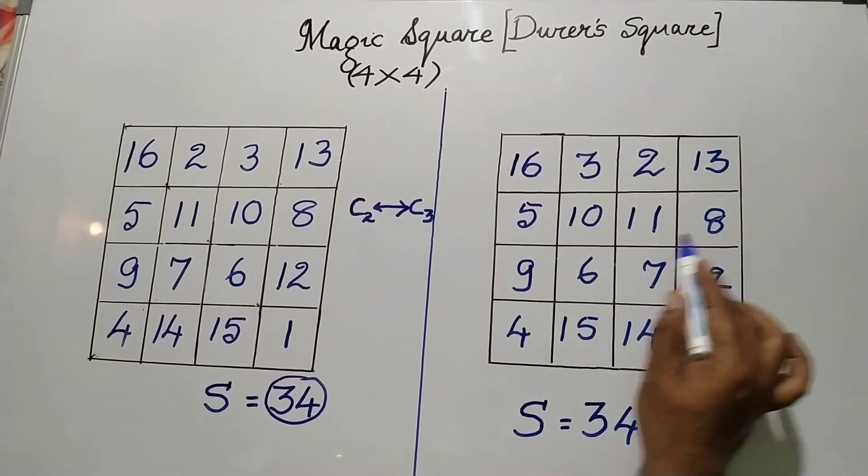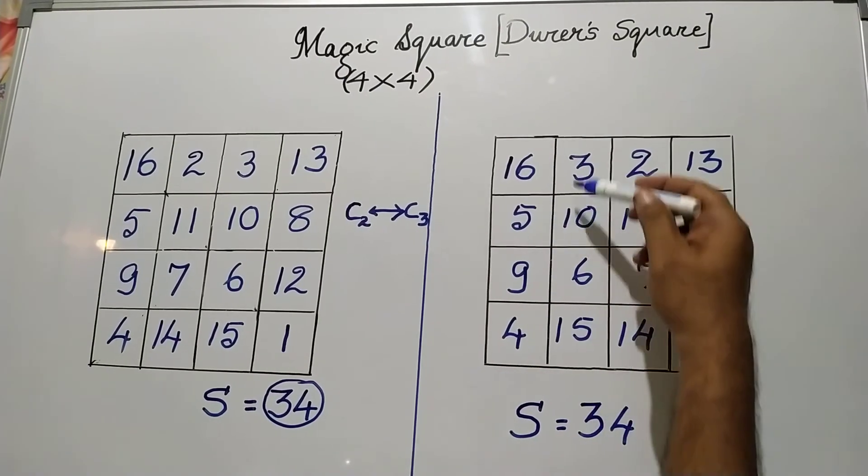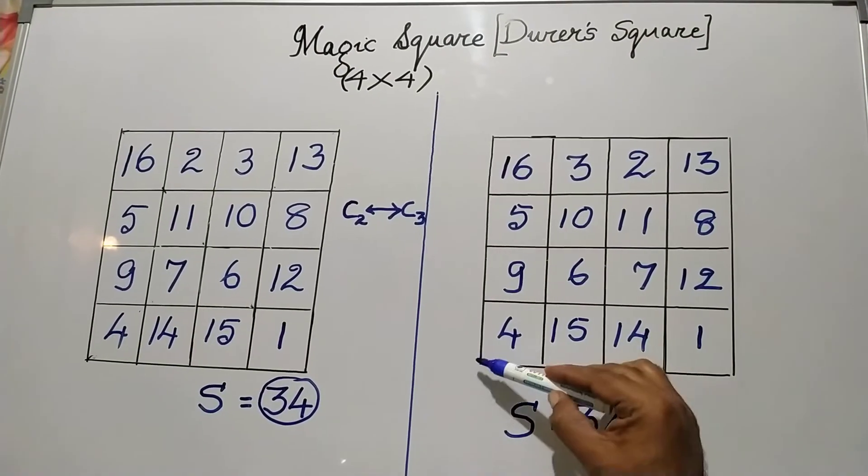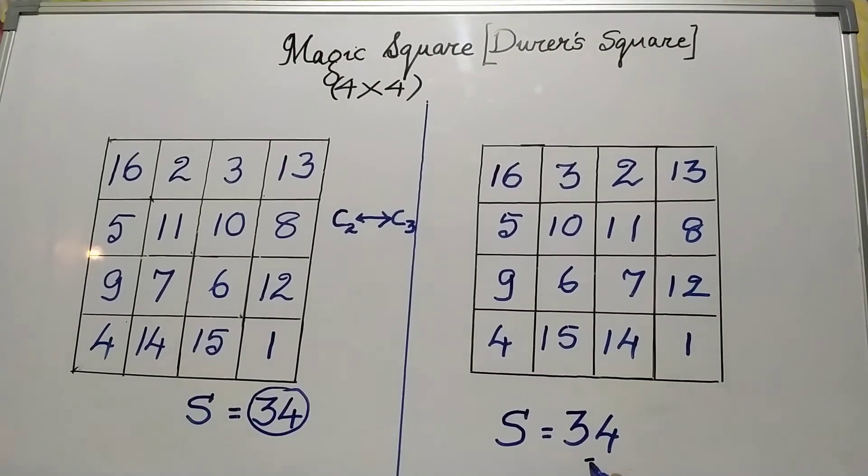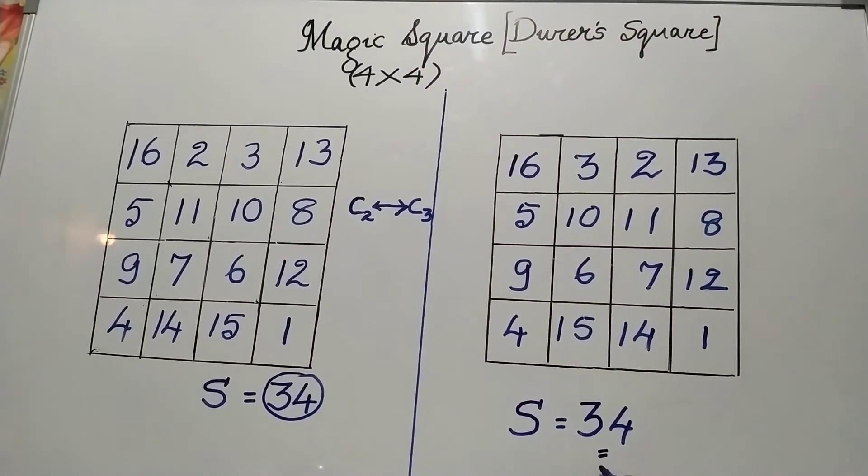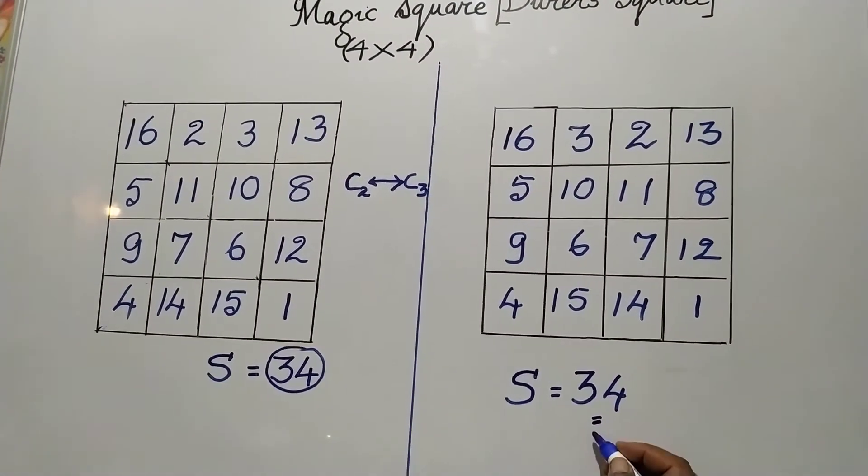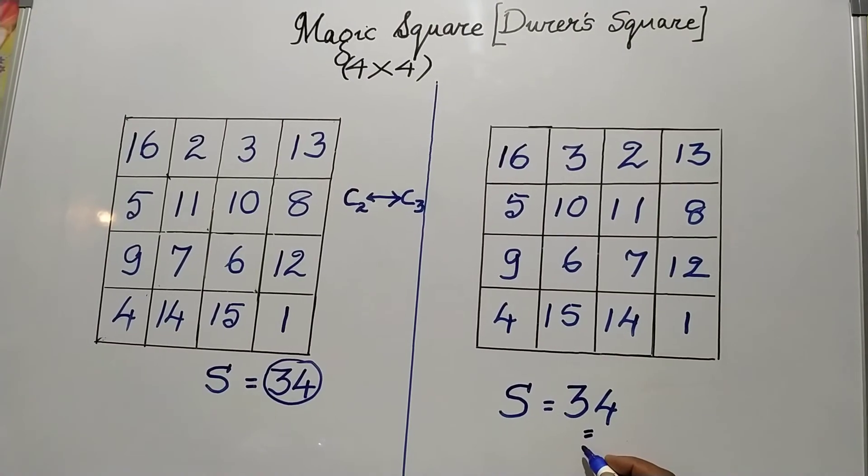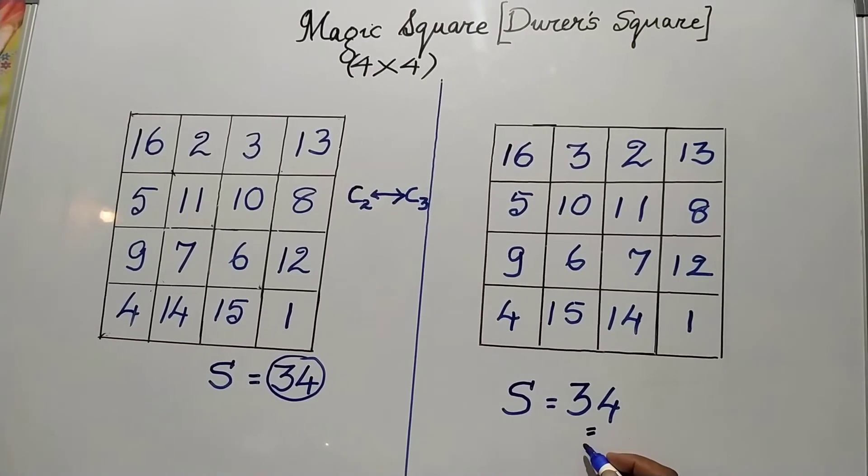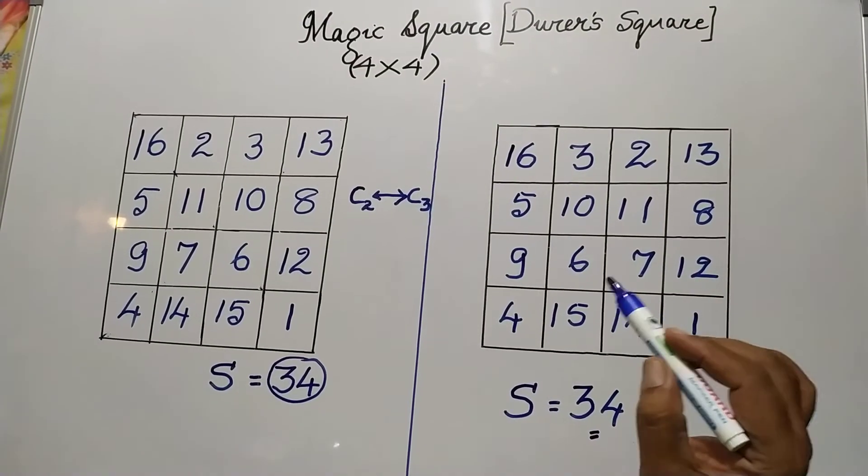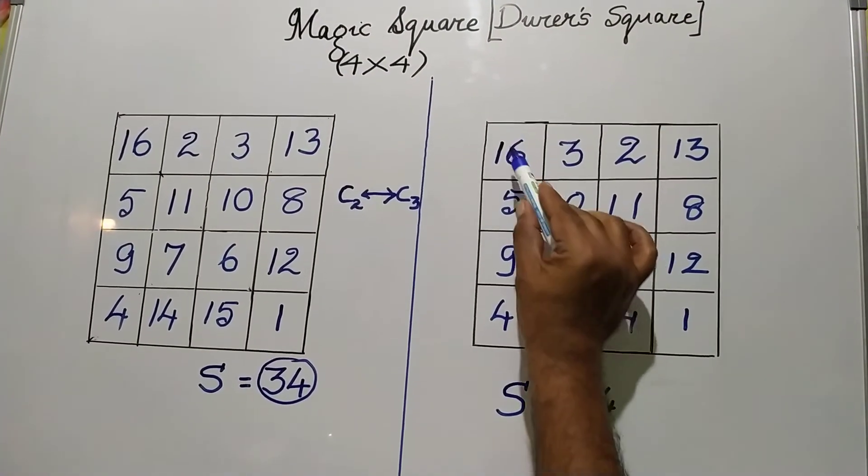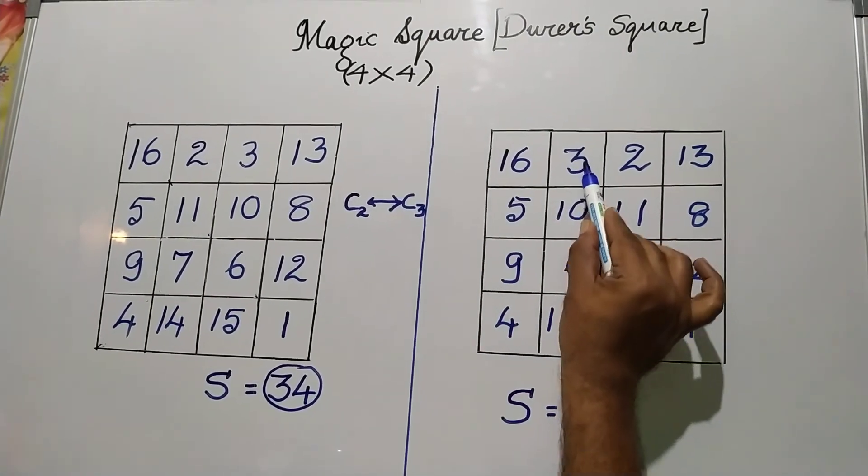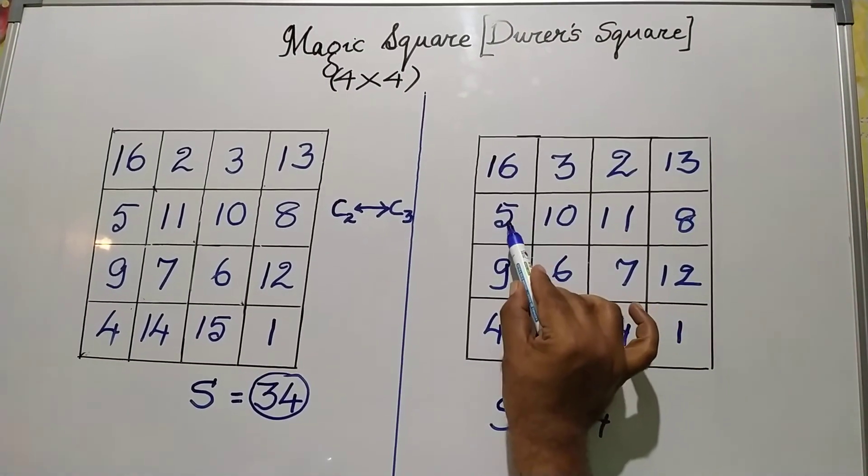In whichever row you add or whichever column you add or if you add on the principal diagonal or on the secondary diagonal, you will get the magic sum as 34. Along with that, this 4 by 4 Dürer's square has some very fascinating properties. Take the 4 squares at the left hand side top. 16 plus 3, 19 plus 10, 29 plus 5, 34.